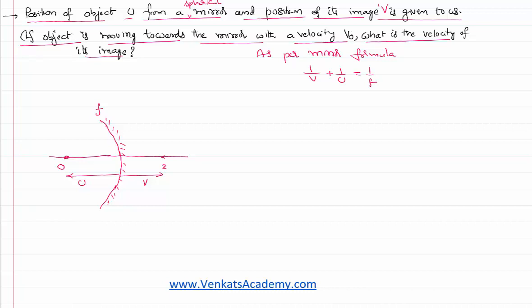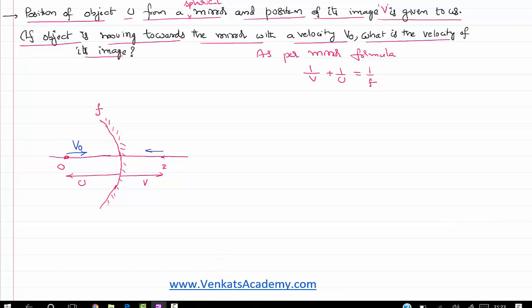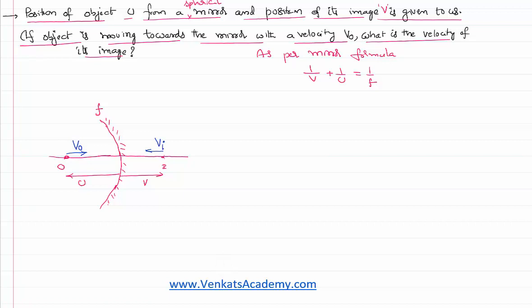Now it is given in the problem that this object is moving towards the mirror with a velocity v_i. I have to calculate what is that v_i. u and v are the positions, u is nothing but position, v is also a position, that's nothing but a displacement. We need velocity, so we shall differentiate the above equation.